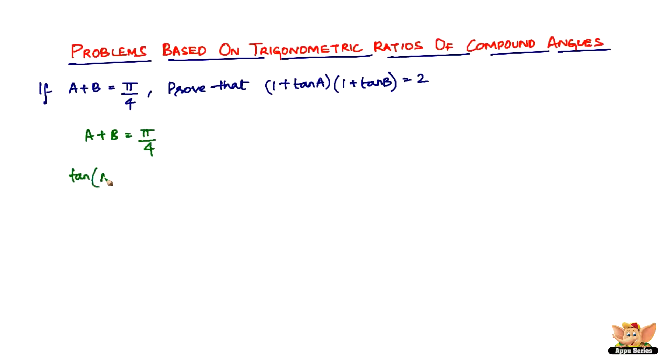So it becomes tan of (A plus B) equals tan of π by 4. Tan of (A plus B) is tan A plus tan B divided by 1 minus tan A tan B.